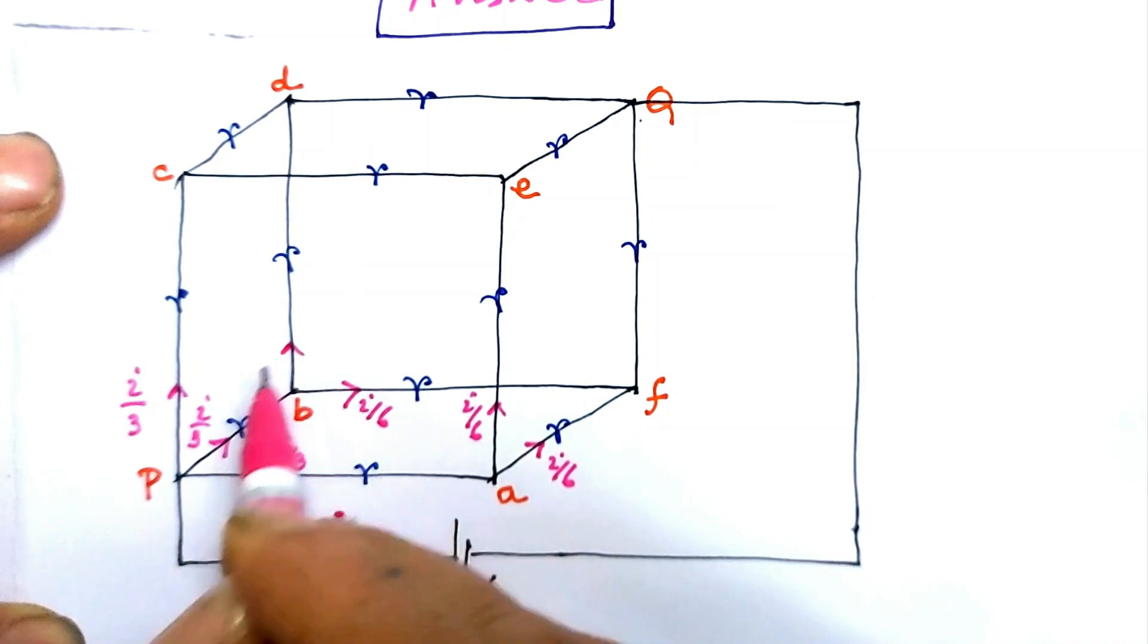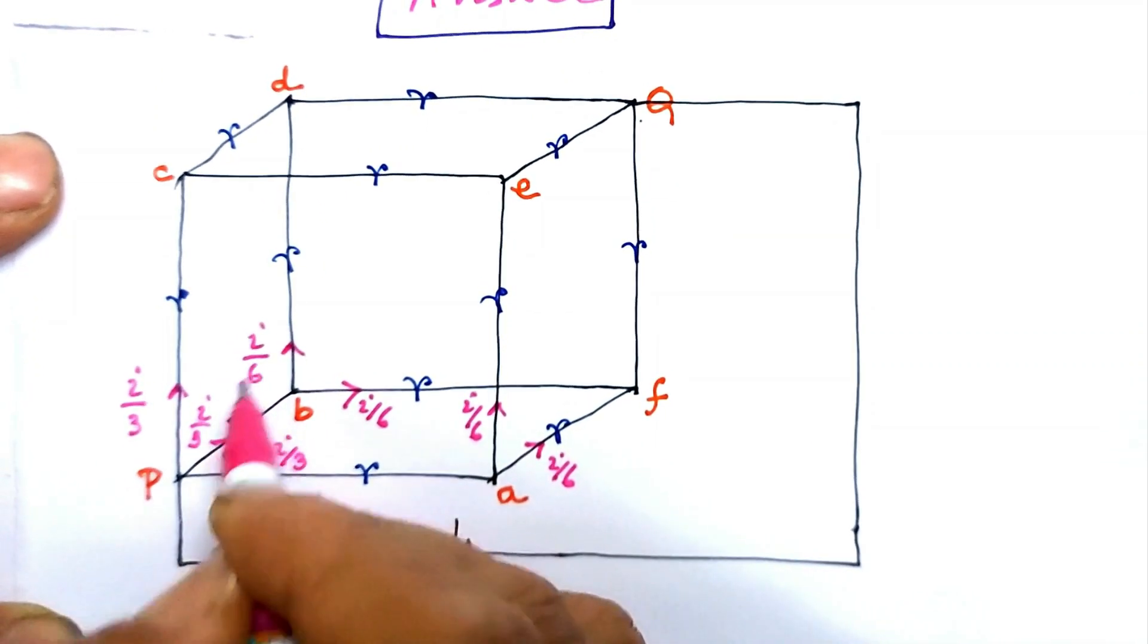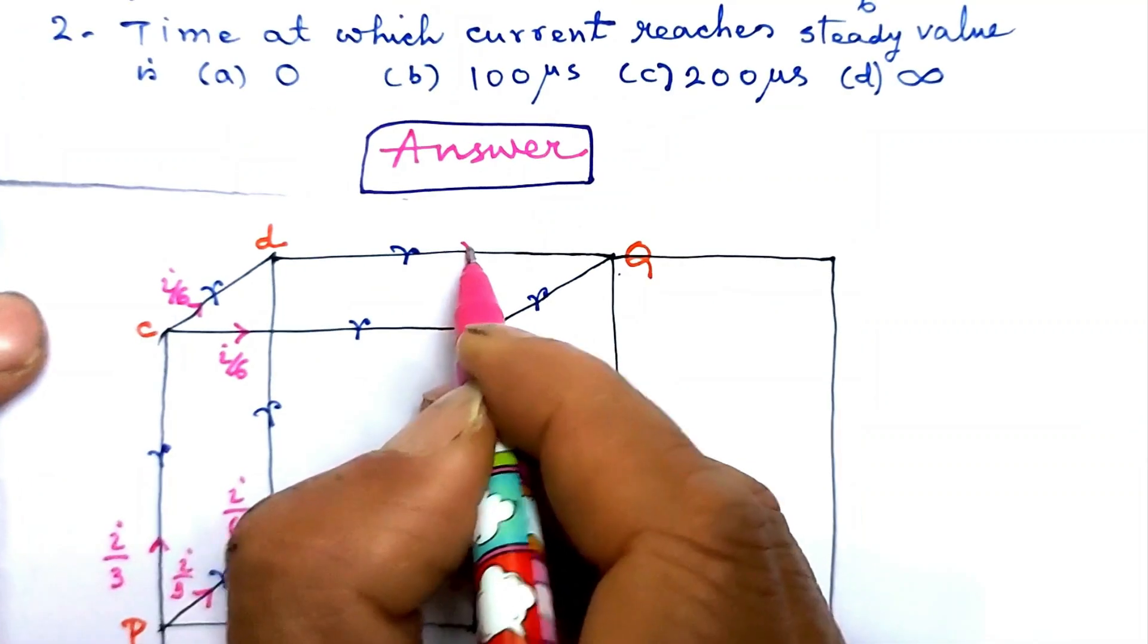Two currents along cd, currents along cd bd join, and we have i by 3 along dq.